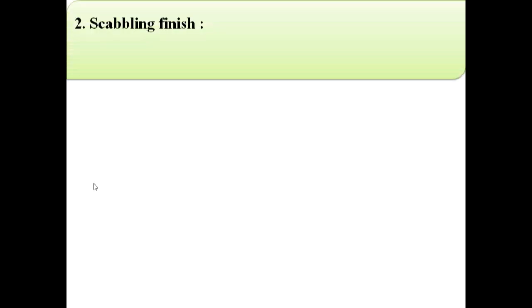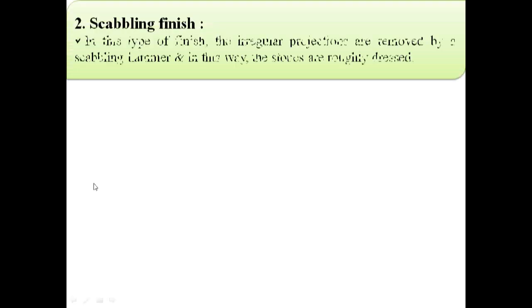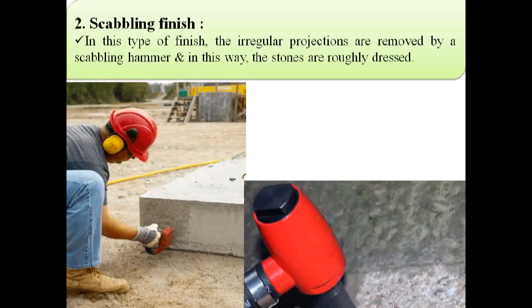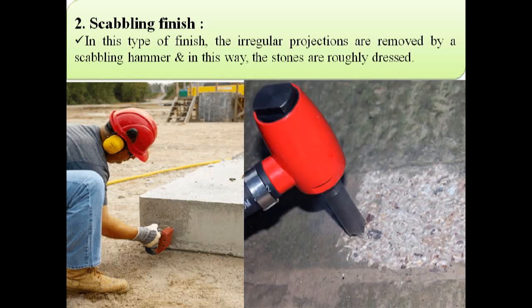The next finish is scabbling finish. In this type of finish, the irregular projections are removed by a scabbling hammer and in this way the stones are roughly dressed. This image shows the scabbling finish by using a scabbling hammer.